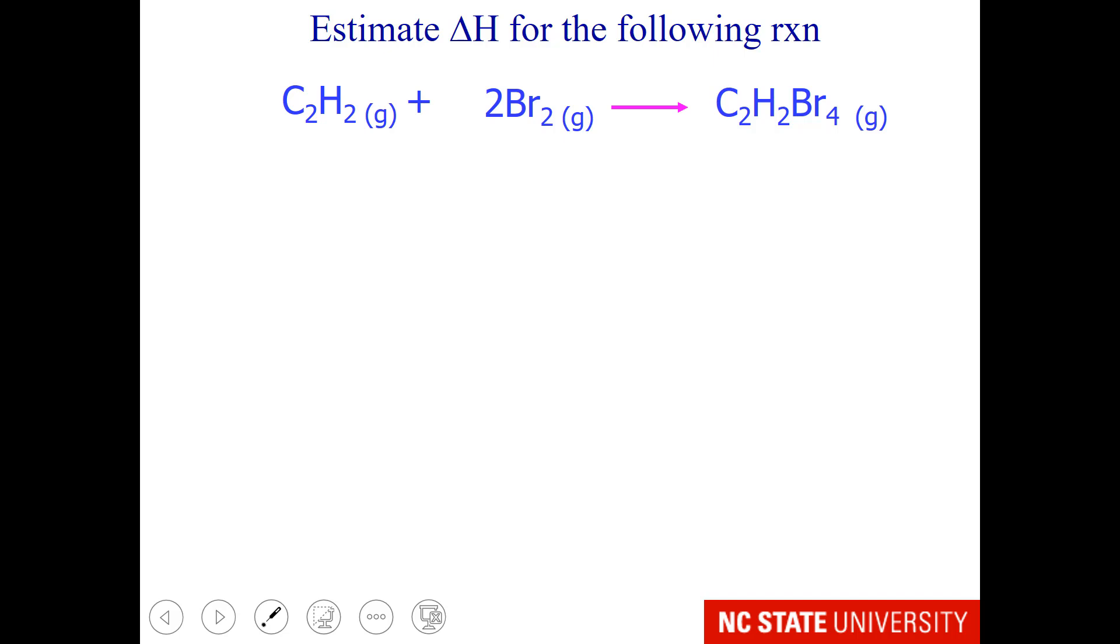I'm going to ask you a bond energy question in a moment, and I will be helping you out here by showing you the Lewis structures. We want to estimate delta H for the following reaction. Lewis structures are needed. This compound, C2H2, has a carbon-carbon triple bond. There are two Br2s, and this would be your final product.